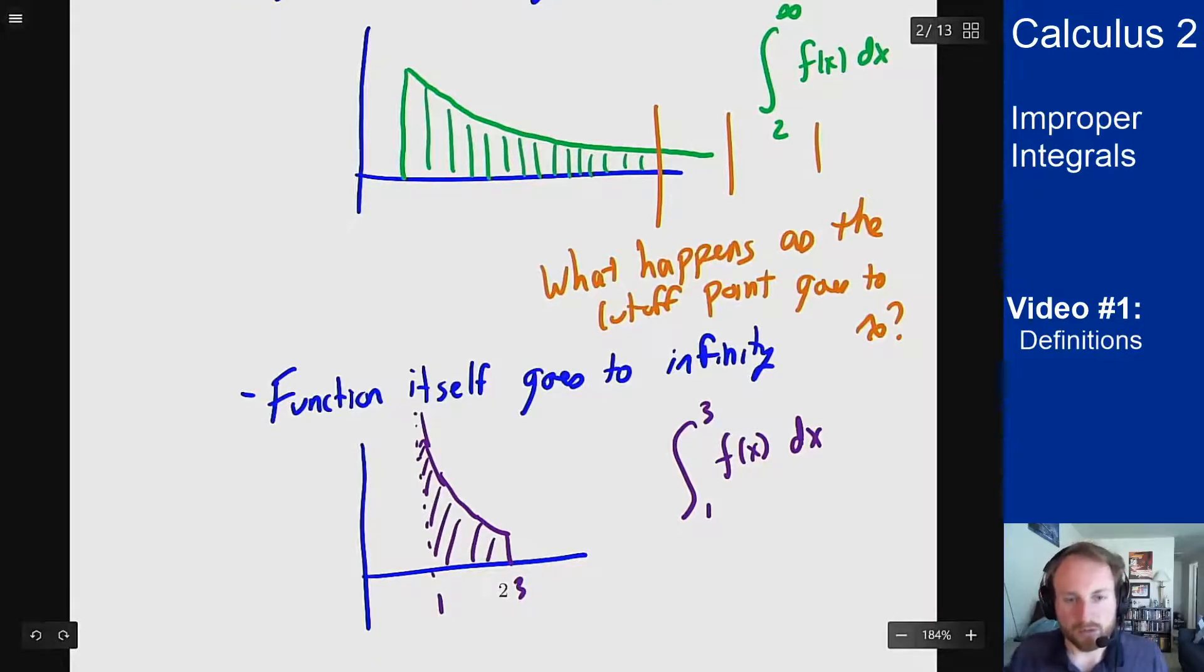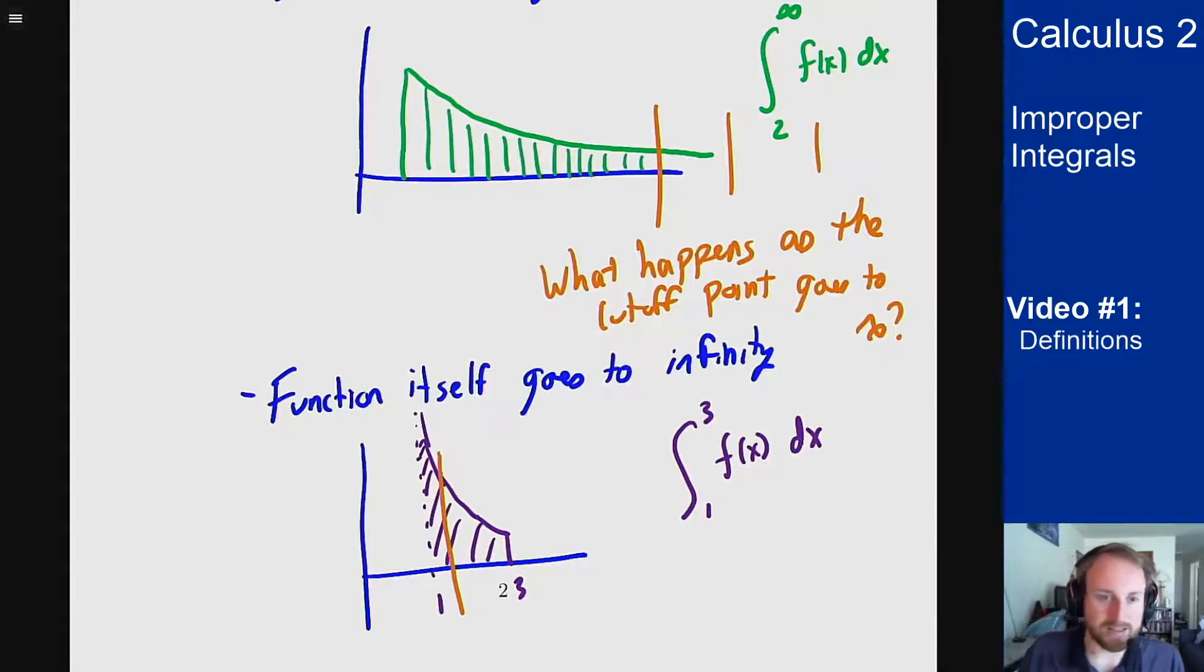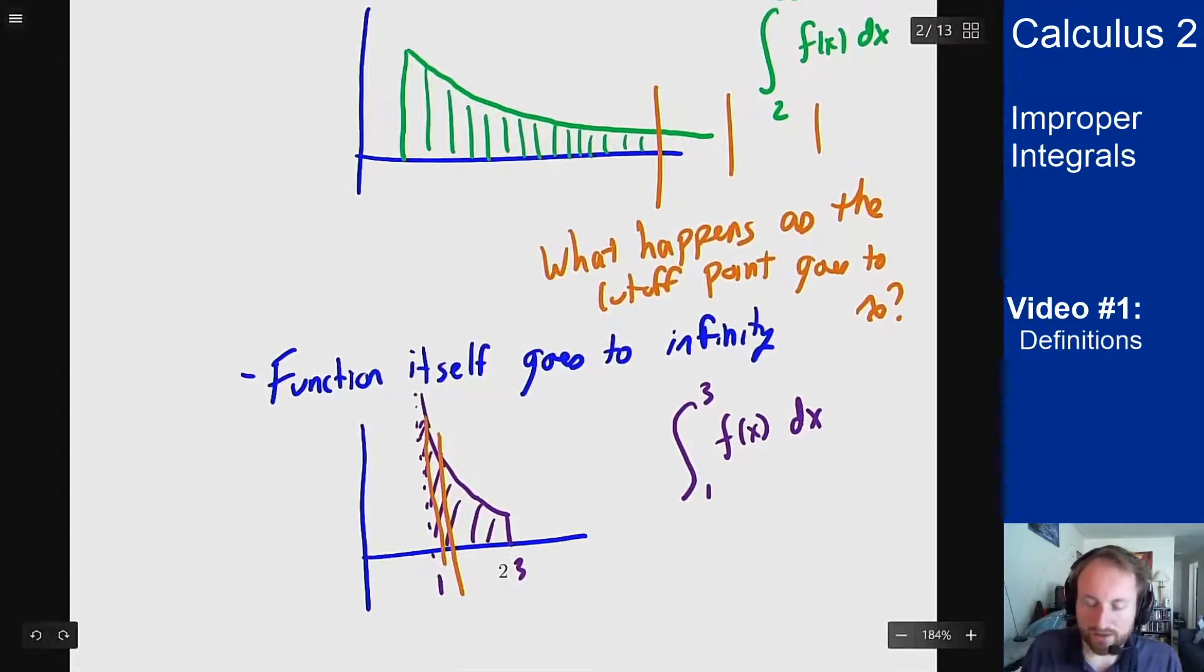For the other type of improper integral, I want to do the exact same thing, but now we can't really use infinity as our target point. We have to use the asymptote as our target point. So I'm going to cut this off somewhere before one. If I cut it off before one, that's a nice well-defined integral. I can find that, no big deal. I can say, what if I get closer to one? What if I get closer and closer and closer to one? What happens? So here it's what happens when the cutoff point goes to the asymptote.